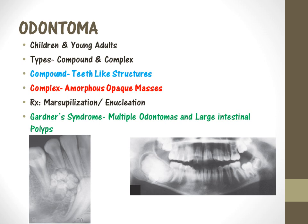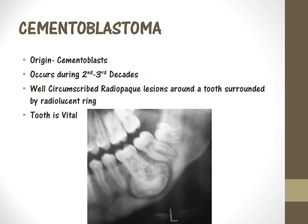Odontoma occurs in children and young adults. There are two types: compound and complex. Compound odontoma has tooth-like structures with enamel, dentine, and pulp — small teeth-like structures. Complex odontoma is an amorphous or opaque mass, usually found in the posterior mandibular region. Treatment is marsupialization or enucleation. The most important point to remember is Gardner syndrome, where you see multiple odontomas along with large intestinal polyps, particularly in the colon. If a question mentions odontoma and asks for an associated syndrome, the answer is Gardner syndrome.